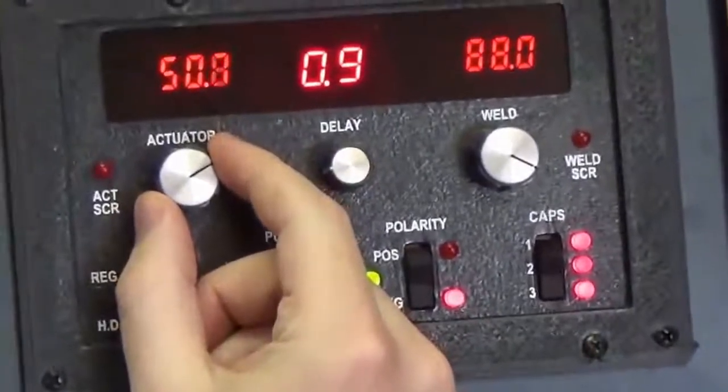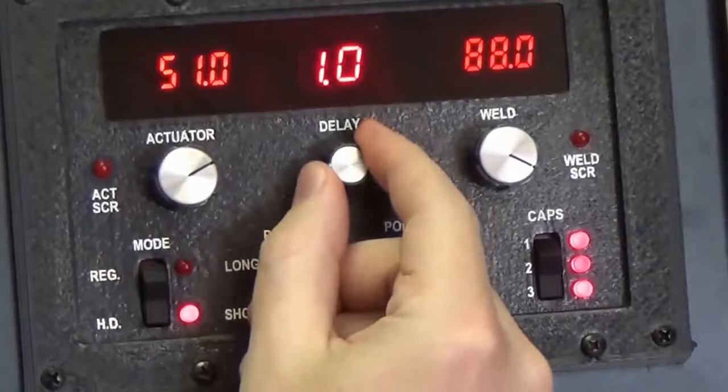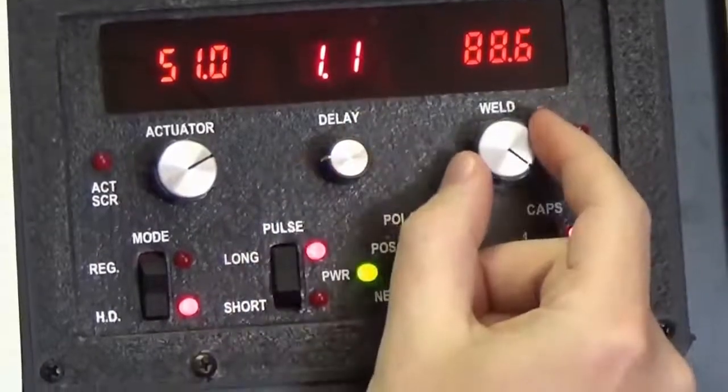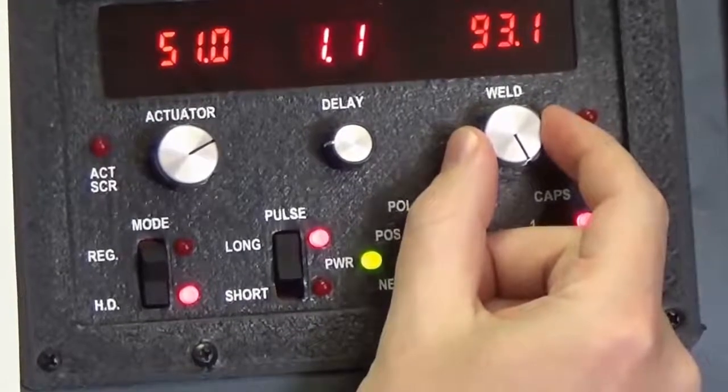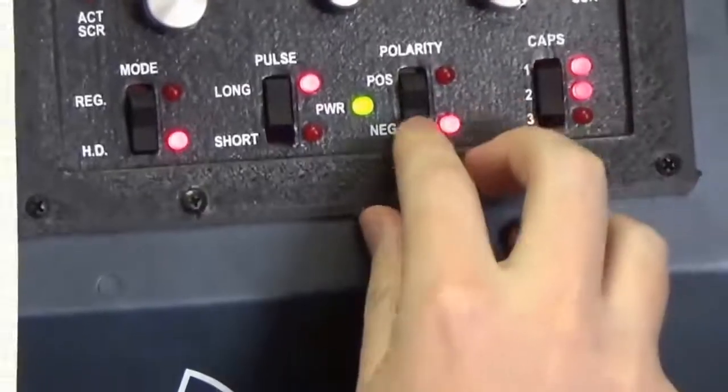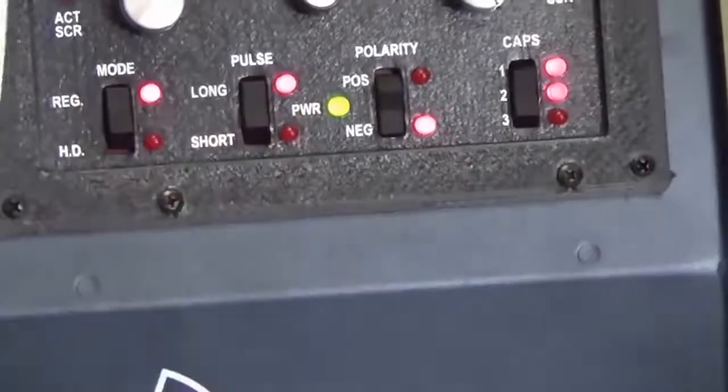Now I'm going to set my weld schedule. 51 volts for the actuator. 1.1 millisecond delay. 93 volts for the weld panel. 2 caps. Negative polarity. Long pulse. Regular mode.